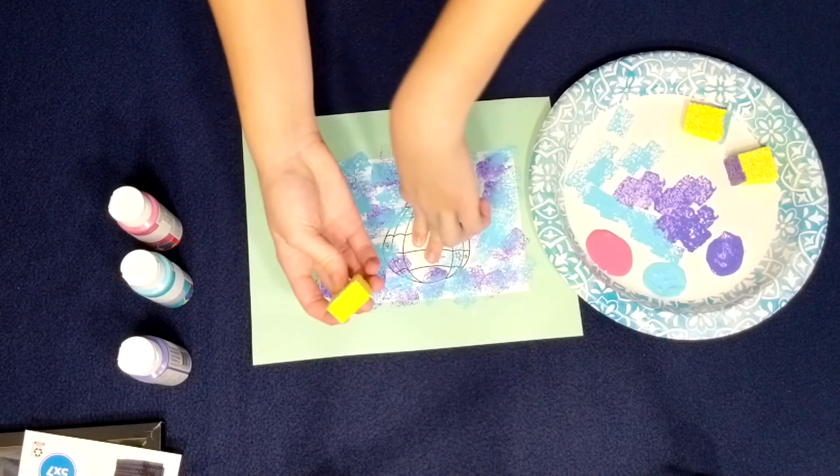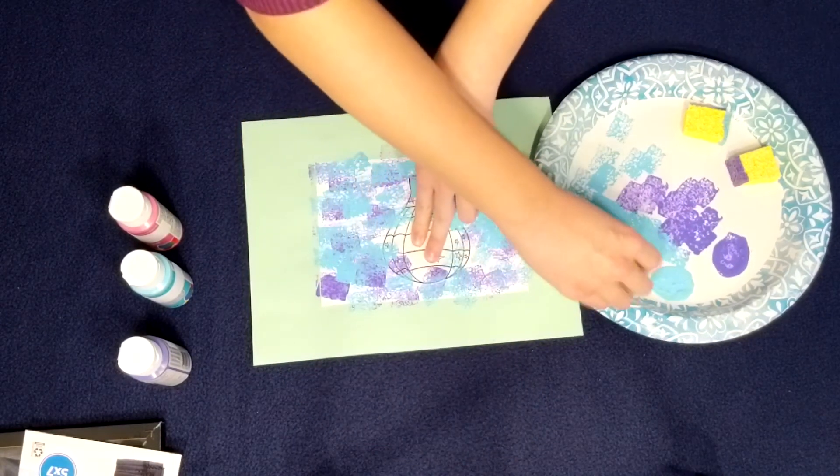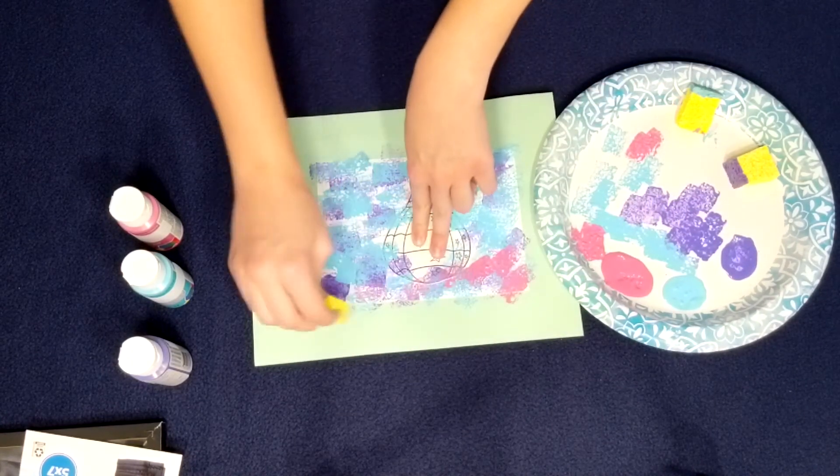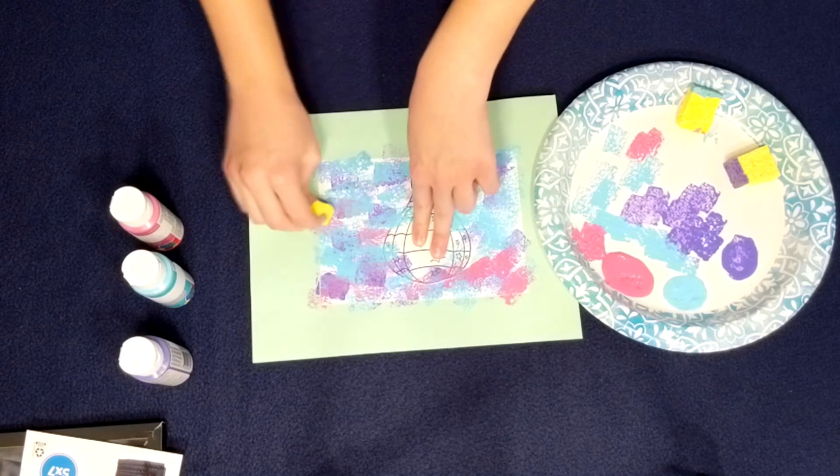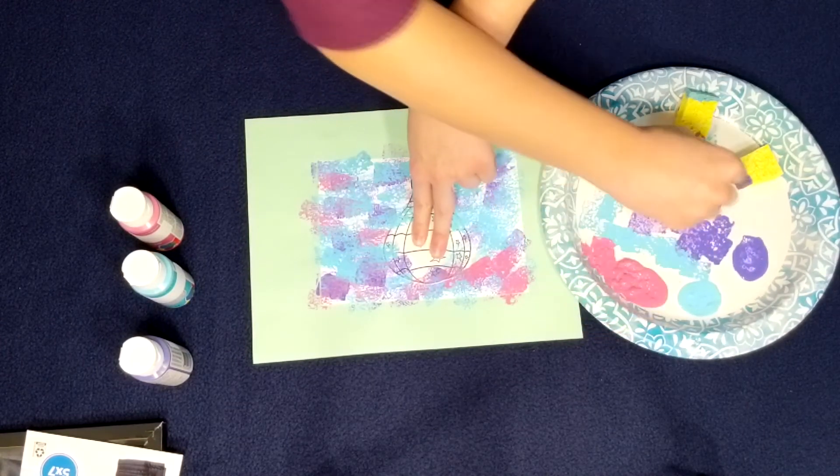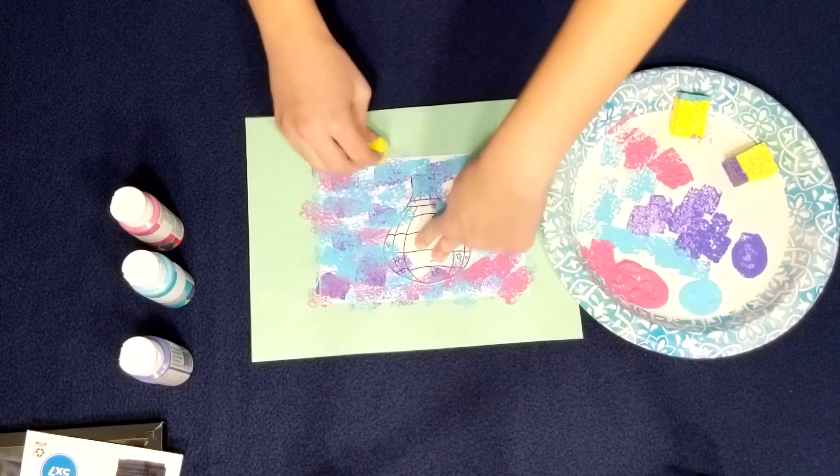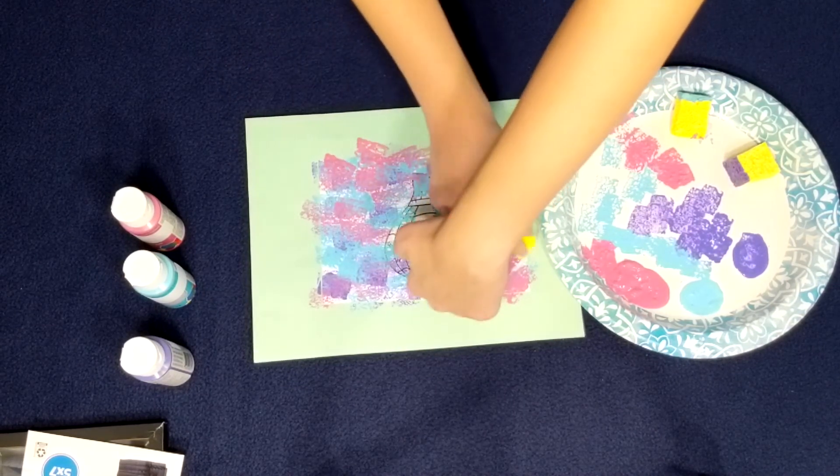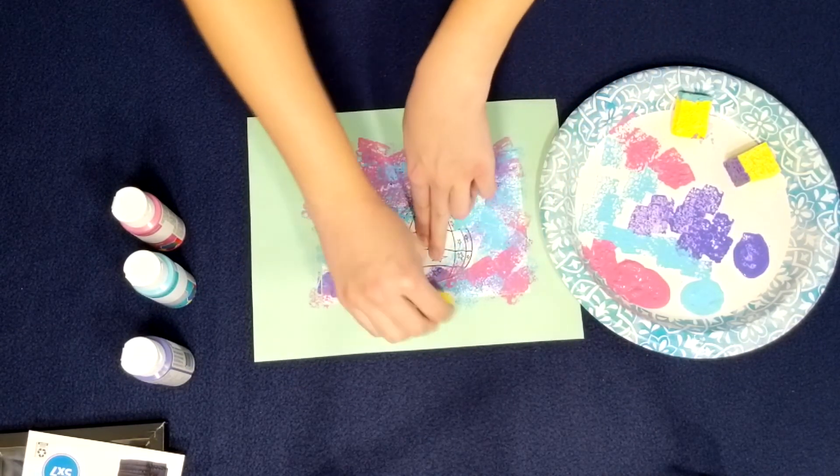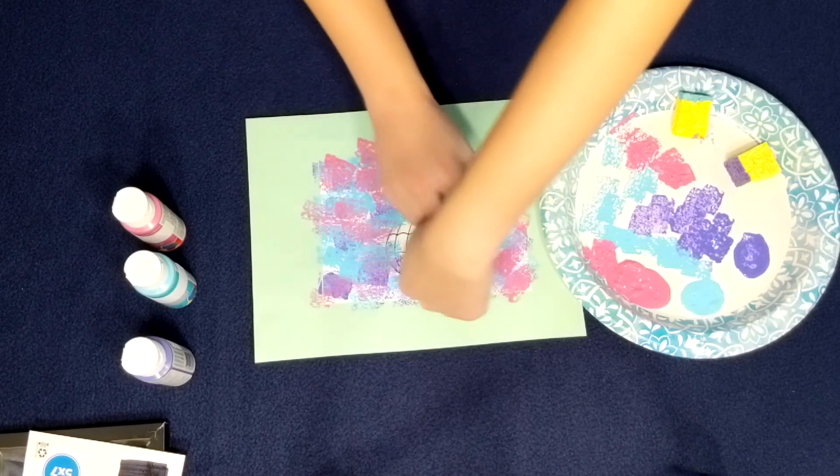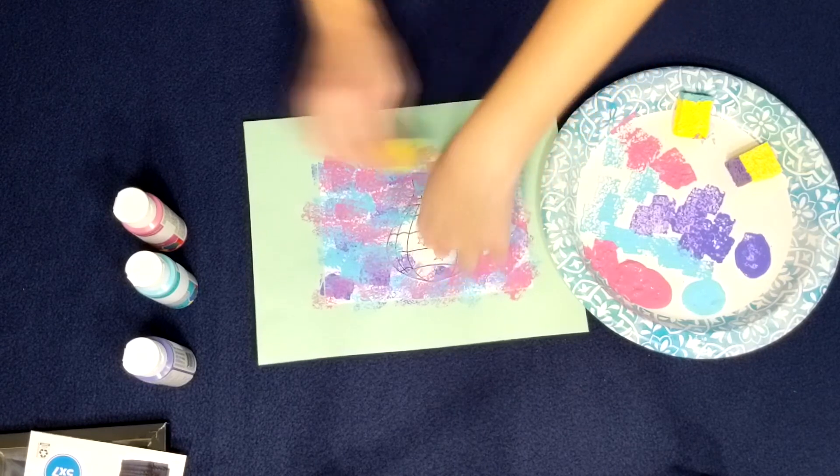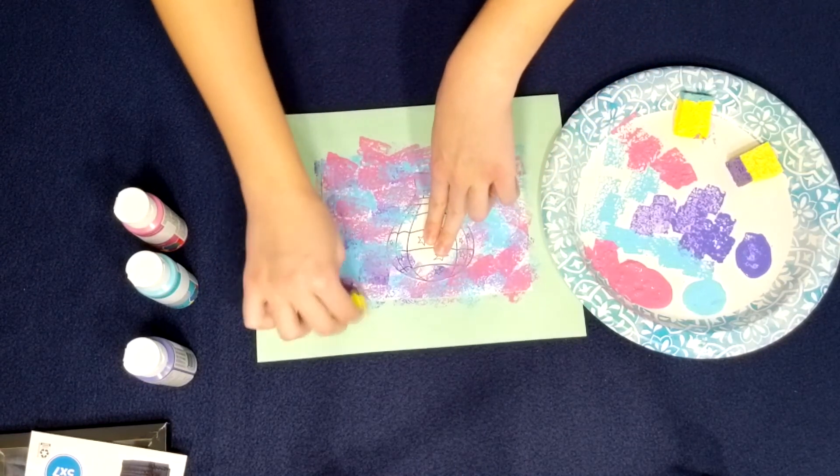Grab your third clean sponge and dip it into your third color and then dab it onto the plate so it's not full of paint. Right now the paper should be almost full of sponges and you should be able to see that sponge mark left on the white. That's why I think it's best to use white because then the colors are more vibrant.